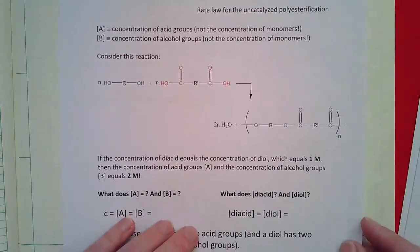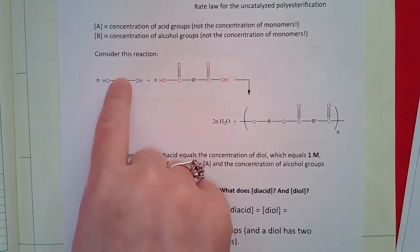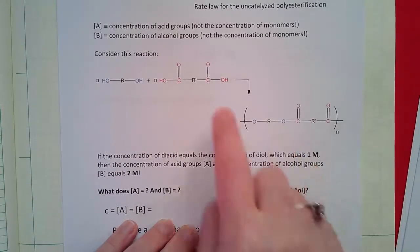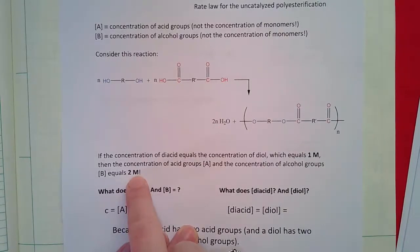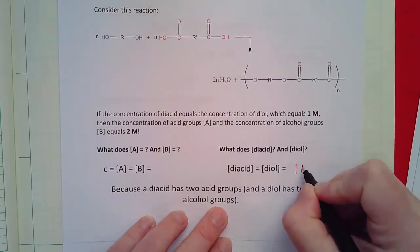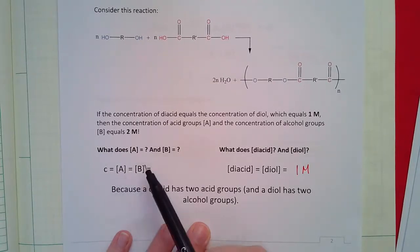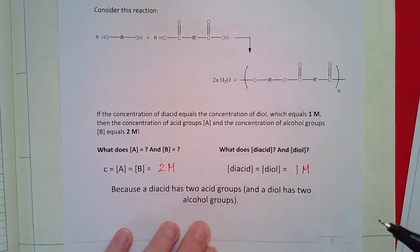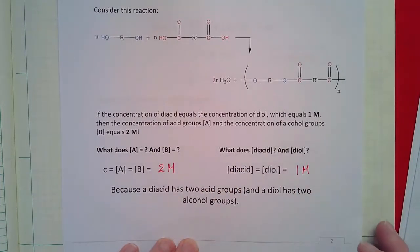If we look at the reaction: let's say the concentration of the diacid monomer equals the concentration of the diol monomer, which is one molar. There are two acid groups per diacid, therefore the concentration of acid groups is two molar. So our concentration of diacid and diol is one mole per liter, but the concentration of acid groups and alcohol groups is two molar, because there are two functional groups per monomer — two acids or two alcohols.